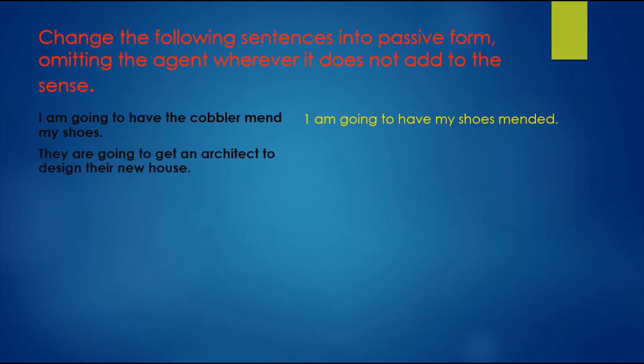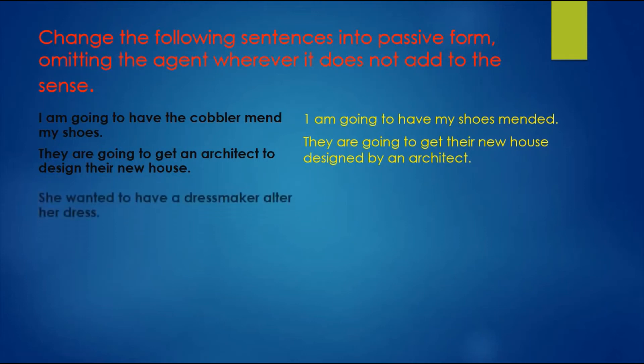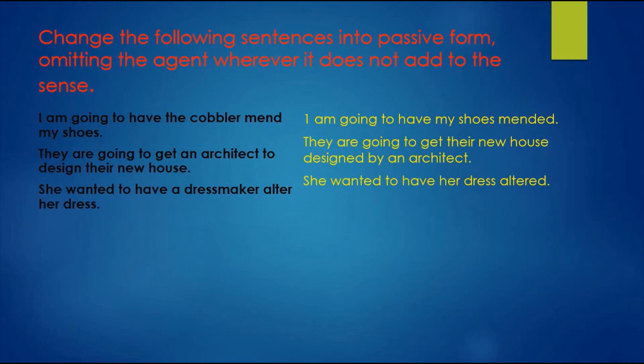They are going to get an architect to design their new house. Passive form: They are going to get their new house designed by an architect. She wanted to have a dressmaker alter her dress. Passive form: She wanted to have her dress altered.